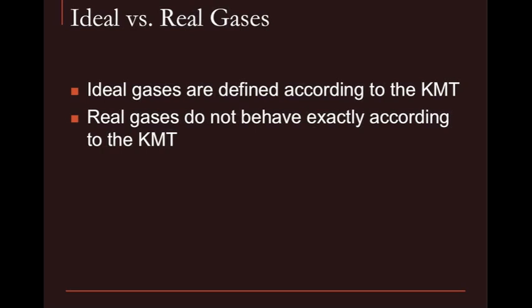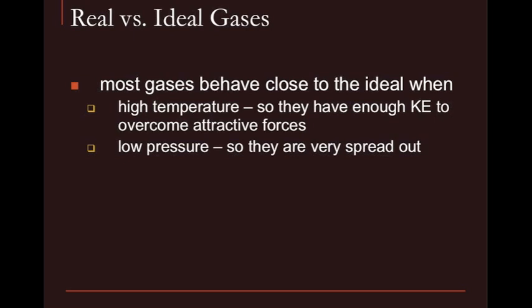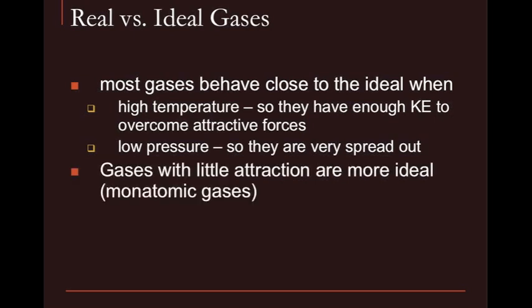Now, ideal versus real gases. Ideal gases are defined according to the kinetic molecular theory; real gases do not behave exactly according to it. Ideal gases are perfect gases — unchangeable, behaving exactly the way you want every single time. In the real world, real gases don't behave exactly according to kinetic molecular theory. Most gases behave close to ideal at very high temperatures, giving them enough kinetic energy to overcome attractive forces, and at very low pressures so they're spread out. Gases with little attraction, like monatomic gases, are more ideal.